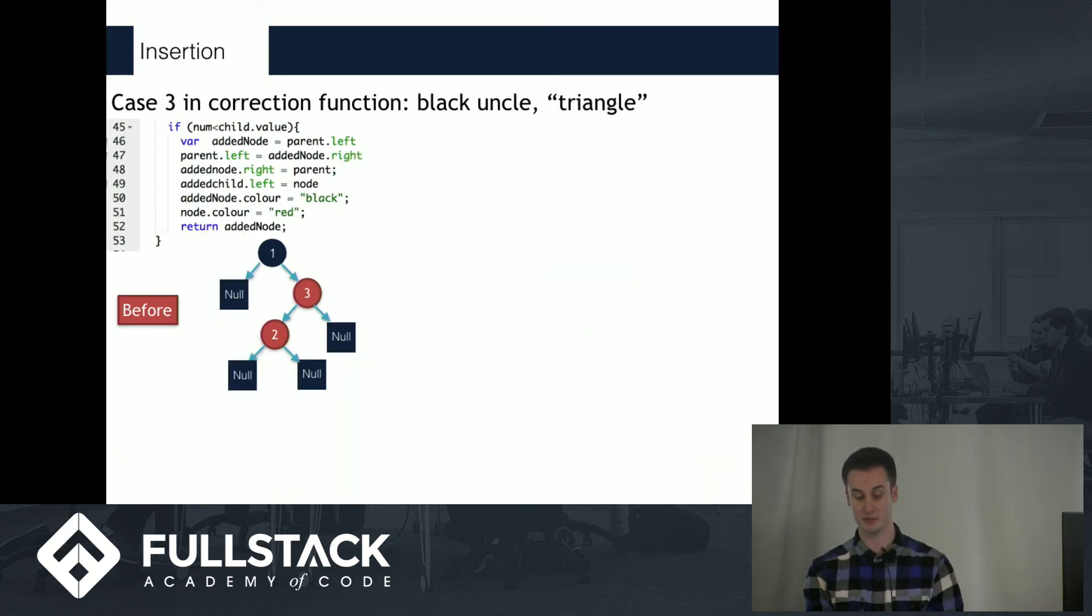Case 3 is actually very similar. Again, we have a black uncle node, but you'll notice this time we have a triangle pattern, which means that the 2 is the left child of the 3, whereas the 3 is the right child of the 1. We could have the same thing on the other side of the tree. And what we do in this case is again a rotation, but it's slightly different.